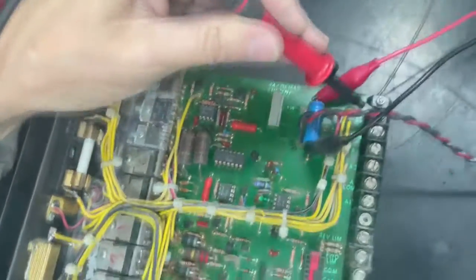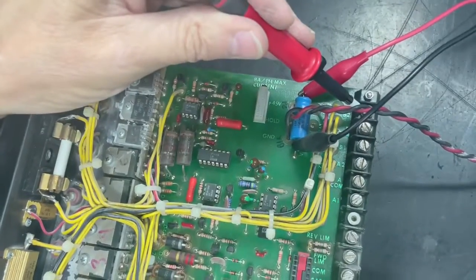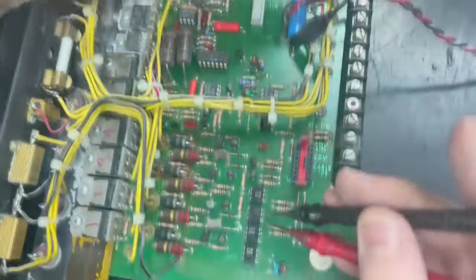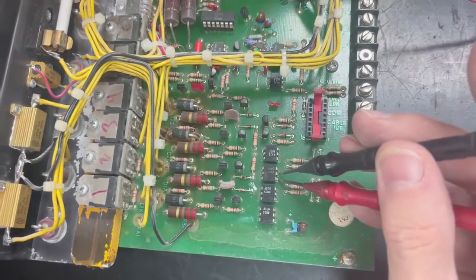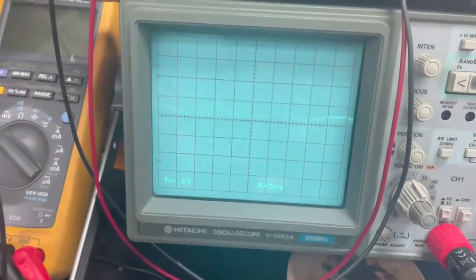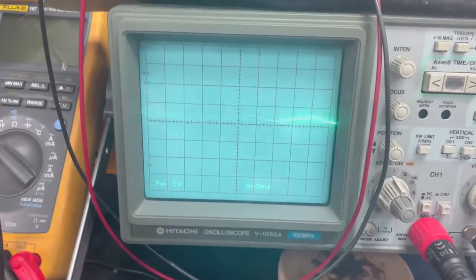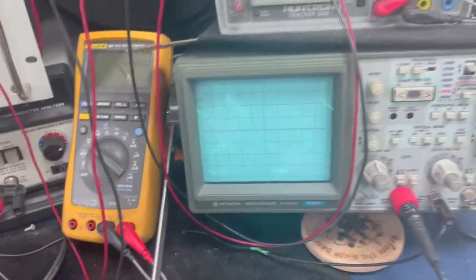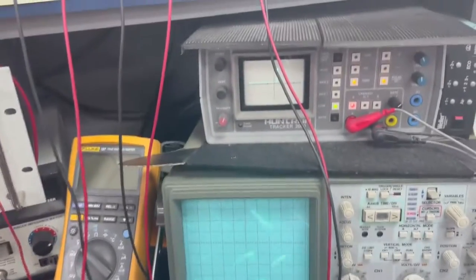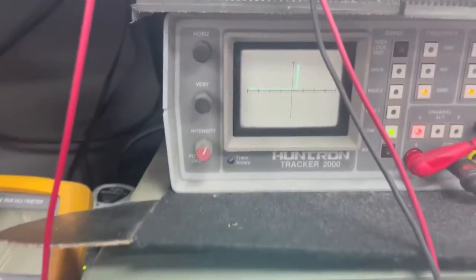So we go over here to B2, and then we are going to trigger it by putting our Huntron across the input to this optical coupler. And when we do, we look over here to the oscilloscope. You can see as we turn it on and off. And on the top, you can also see the diode being triggered on the waveform of the Huntron.